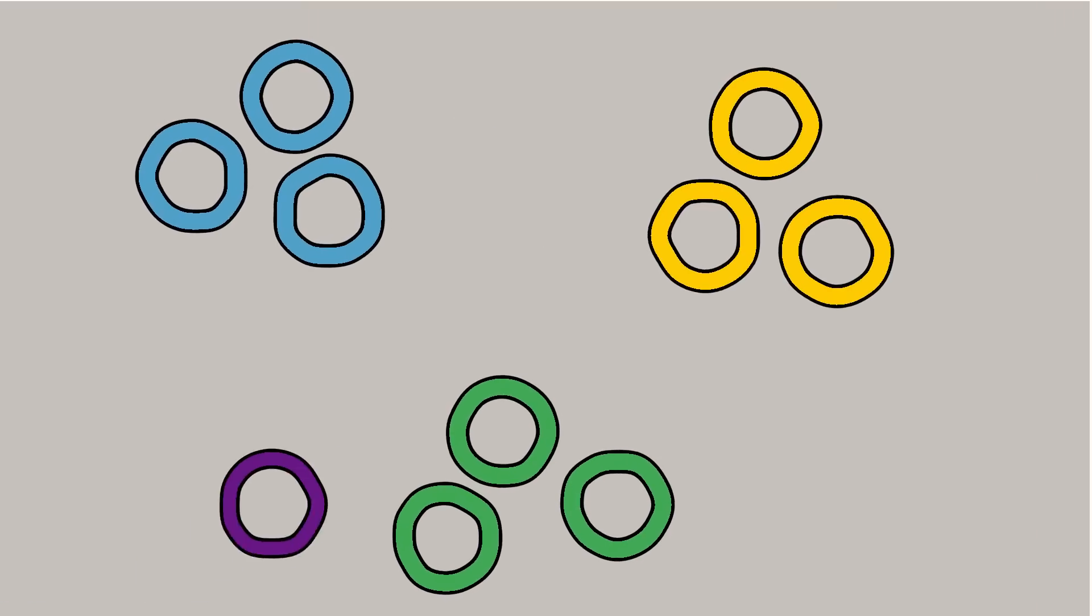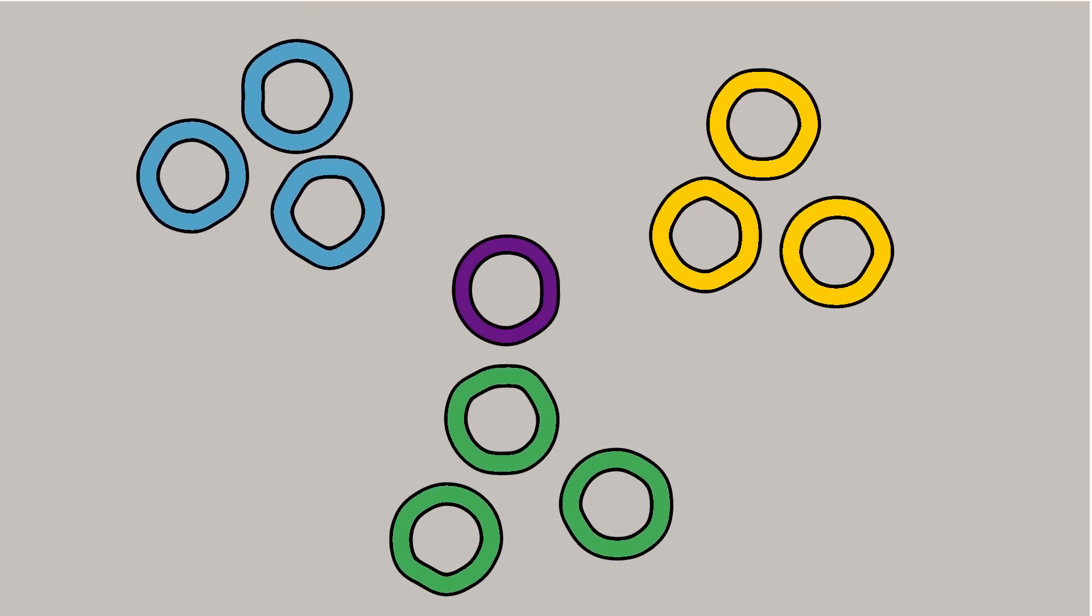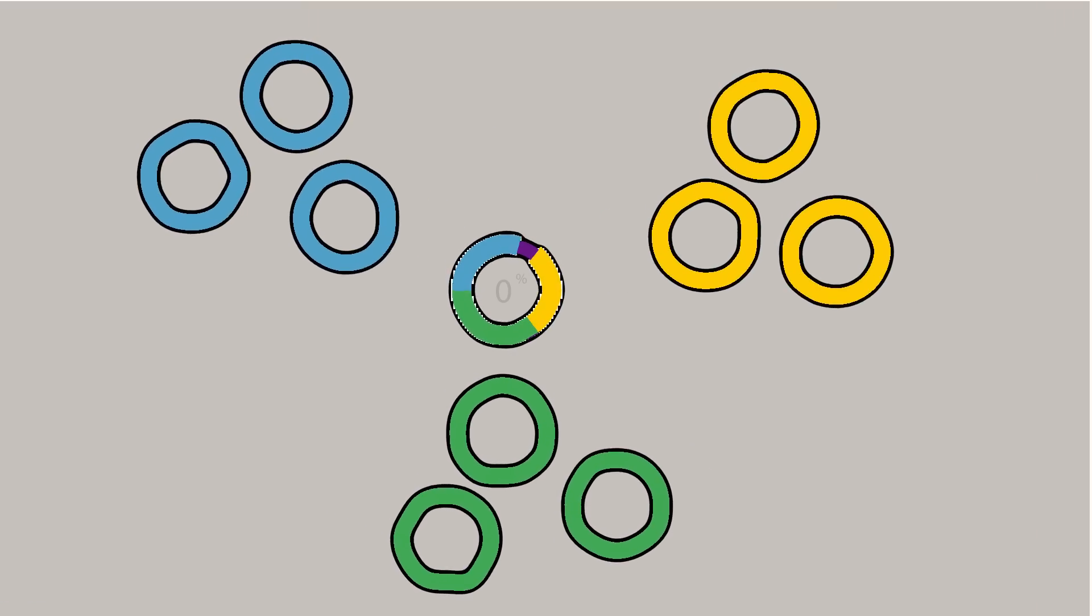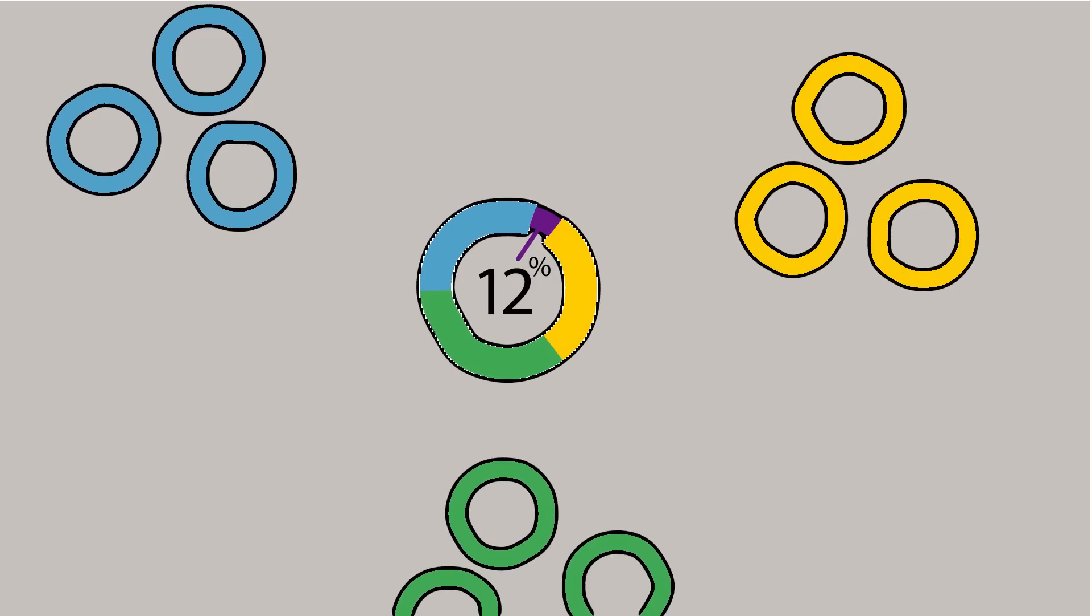Now what's interesting is that lateral gene transfer seems to be changing our understanding of life on Earth. One archaea was found with so much lateral gene transfer, only 12% of its own DNA came from its species.